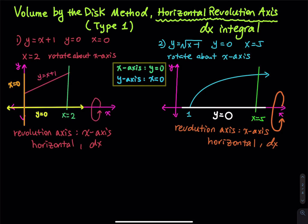You may notice textbooks show a 3D picture — those are not easy to draw. As long as you understand the process, you don't need a 3D picture to get the question right. The concept of this volume problem is: figure out the 2D area first, spin it 360 degrees about the axis, and after spinning you get a 3D object.